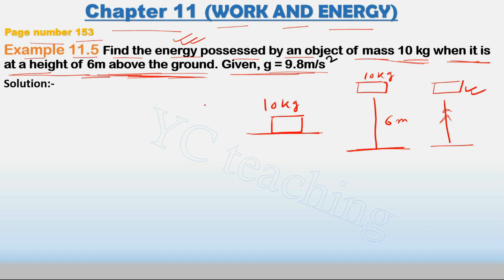For example, if an object is 15 kg and that object moves with 2 meter per second velocity, then if any object moves with some velocity, that means it has kinetic energy. But here we are going to find the potential energy of this object.